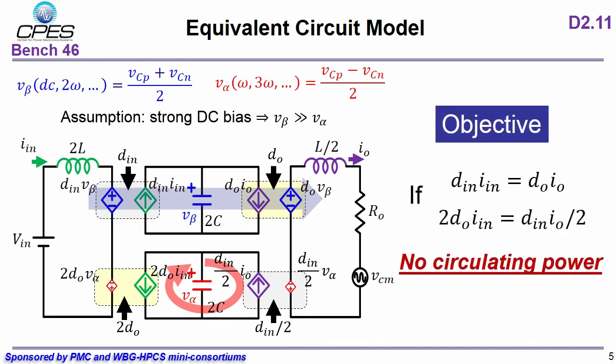When we do a coordinate transformation, the objective to reduce capacitors is very clear. If the two current sources are balanced, which means D-in times I-in equals D-O times I-O, and 2 times D-O times I-in equals D-in times I-O, when these two conditions are implemented, there is no circulating power exists in MMC, which means we can greatly reduce the capacitor.